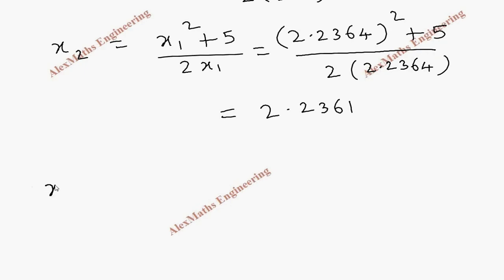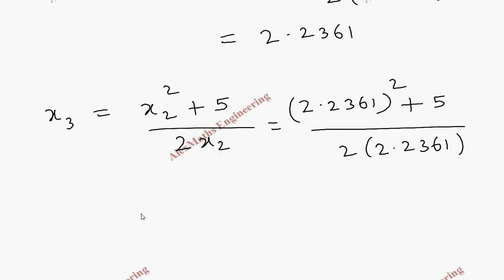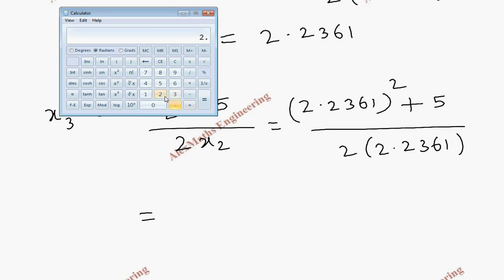Now once again, we go for the next value, that is x3, which is x2 square plus 5 whole divided by 2x2. So 2.2361 whole square plus 5 divided by 2 into 2.2361. So using calculator, we take 2.2361 square value, then plus 5, then divided by 2 into 2.2361. Once again, we are getting 2.2361 after rounding off to 4 decimal places.